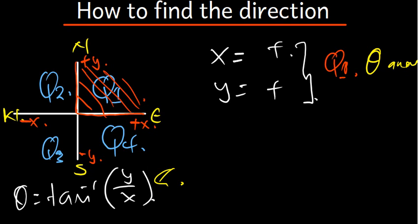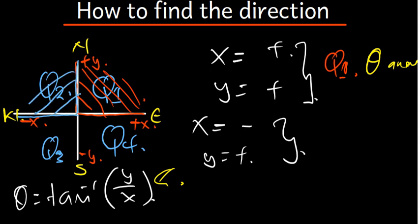Now let's say the x-component is negative and the y-component is positive. The x is negative, the y is positive, meaning the angle is supposed to be in the second quadrant. Whenever you are using these principles, you ignore the negative — don't plug in x as a negative. After ignoring the negative and plugging in the values, the answer is 180 minus theta.